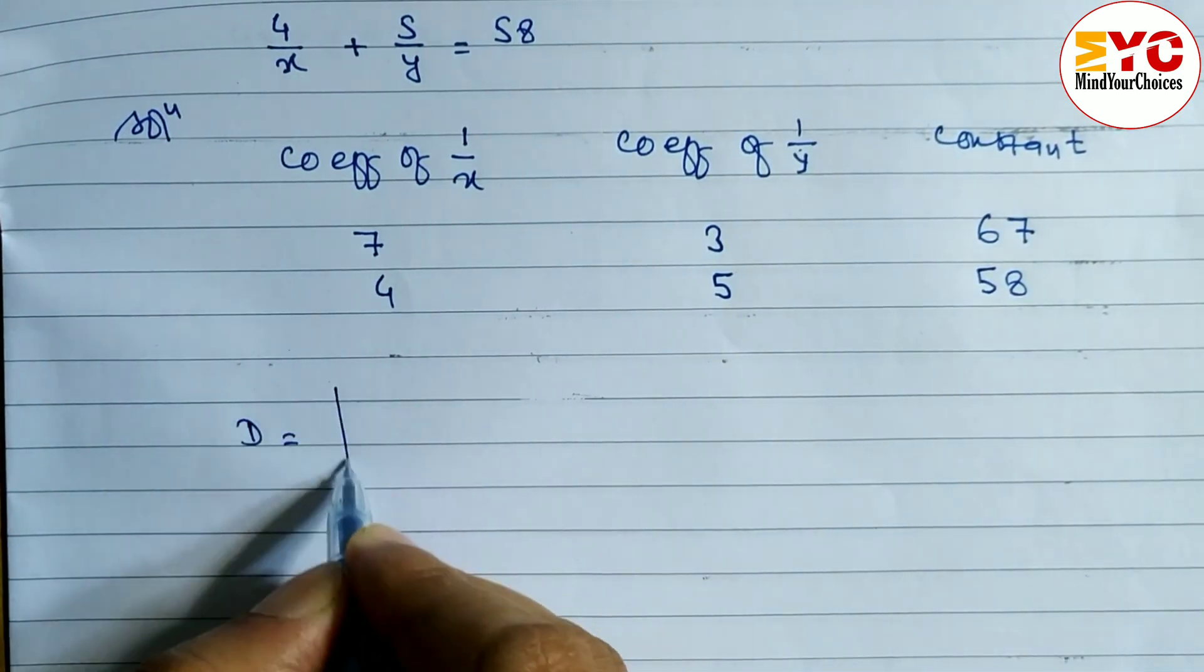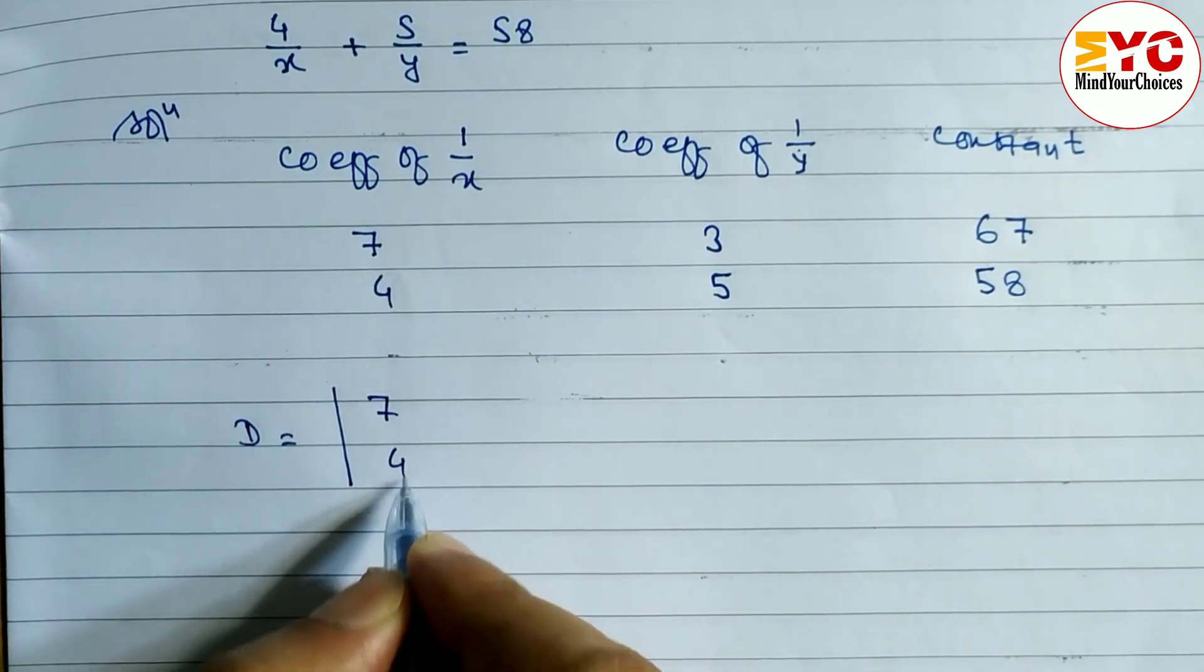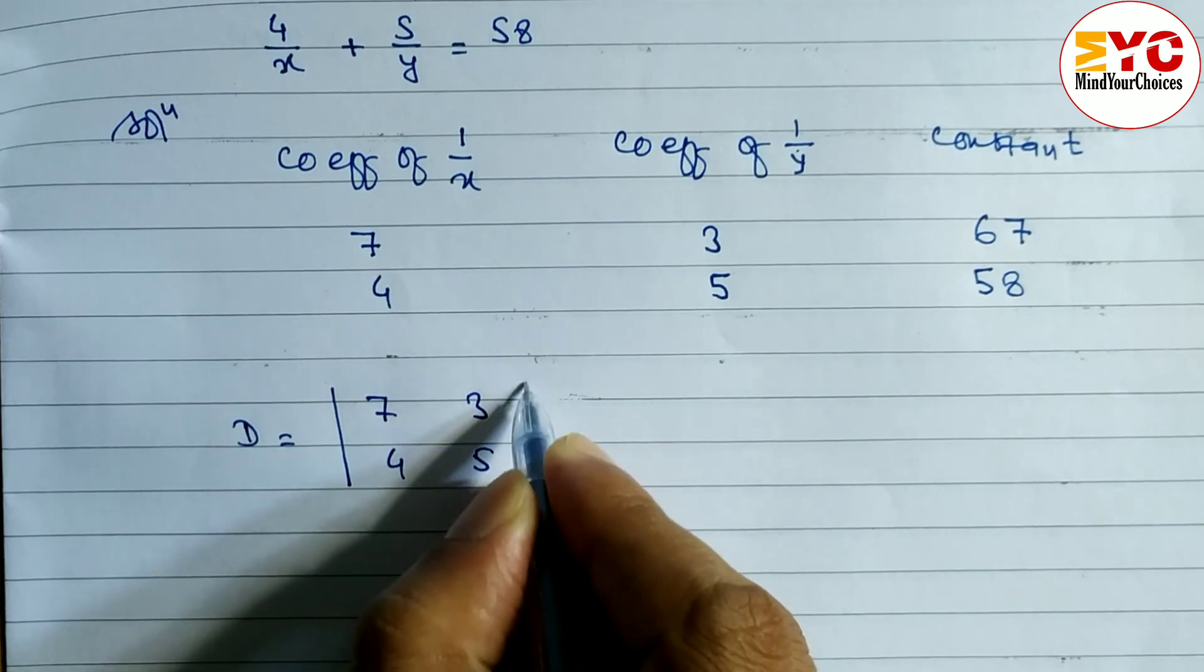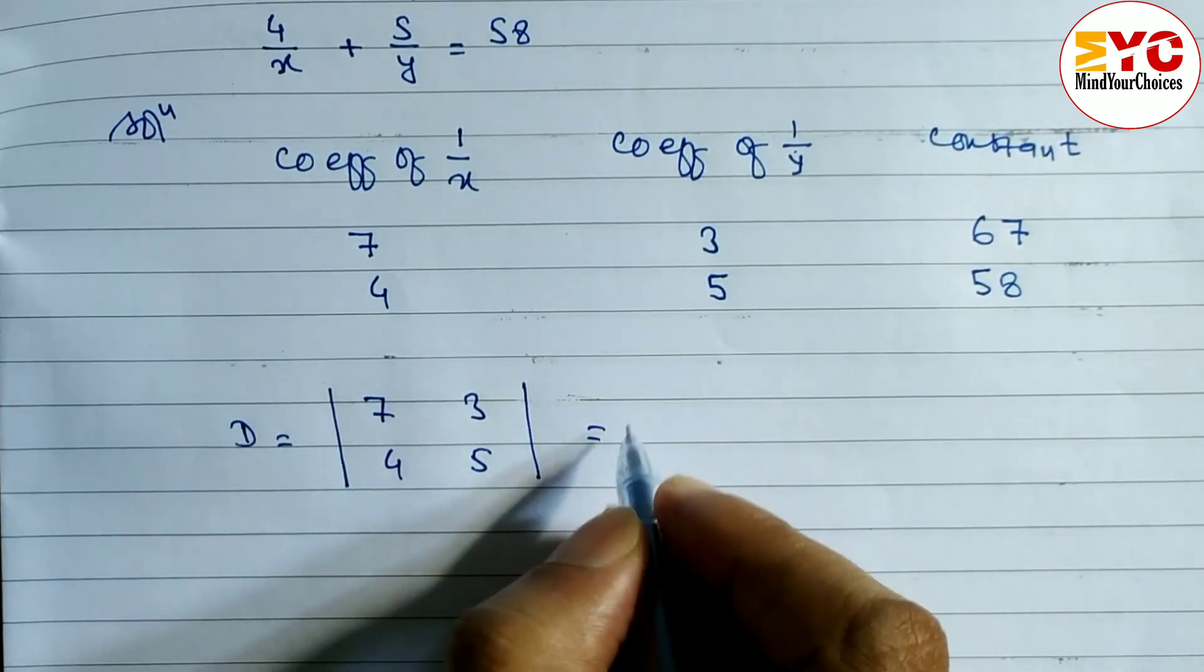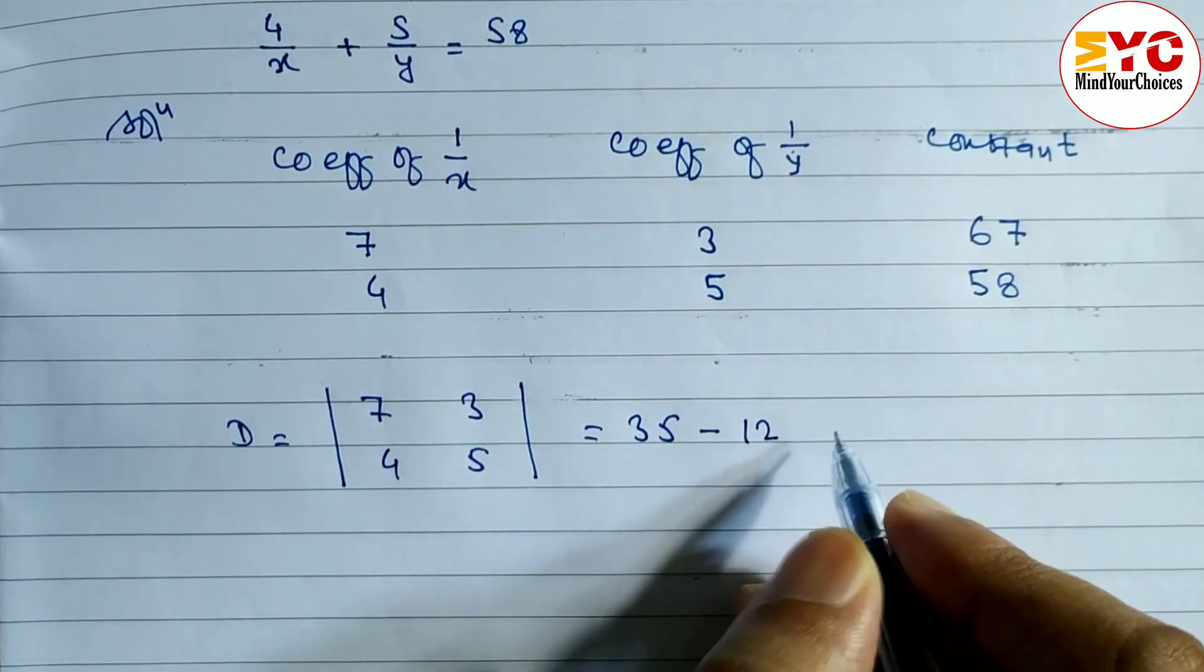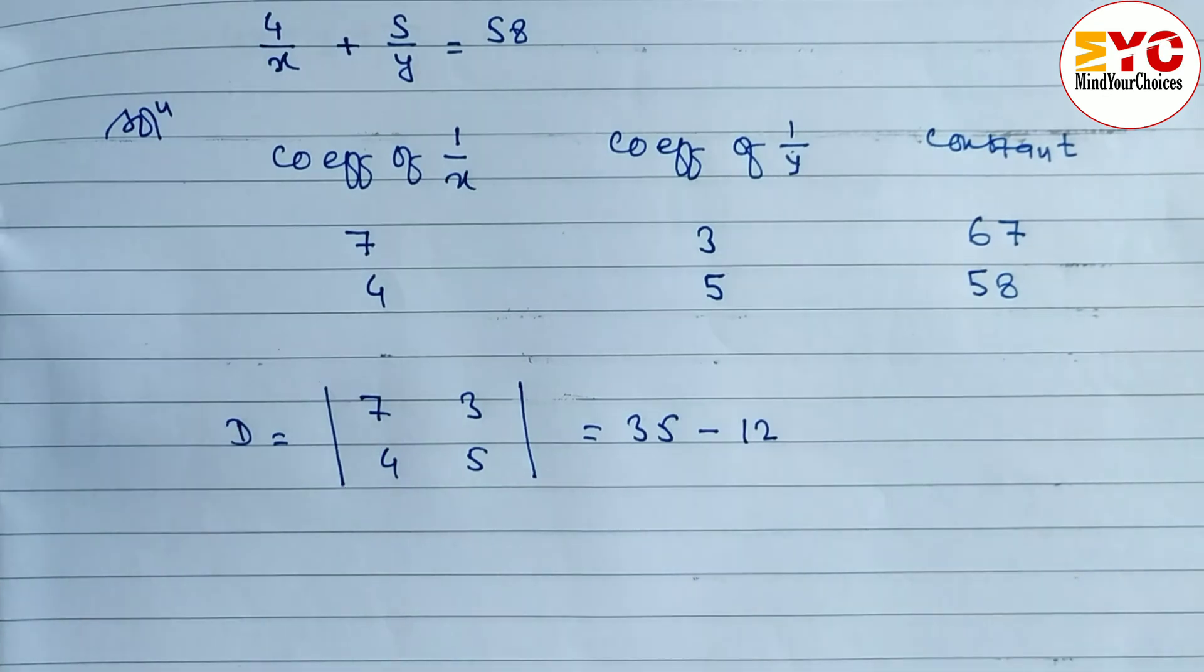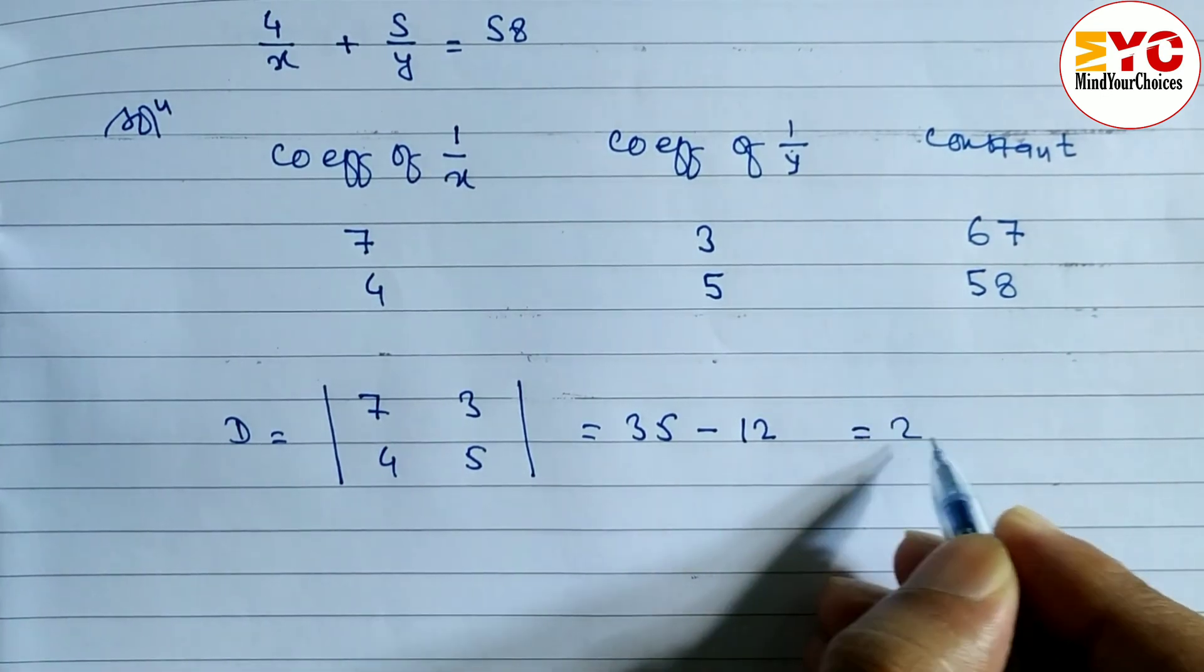D. To find out d, we have to take coefficient of 1 by x and coefficient of 1 by y. So here 7, 4, 3 and 5. Let's multiply the main diagonal. 7, 5's are 35. So we have to write here 35 minus this to multiply 4, 3's are 12. Is equal to 12.